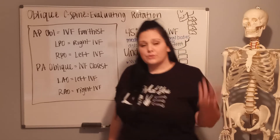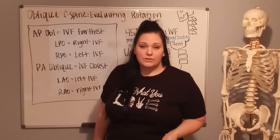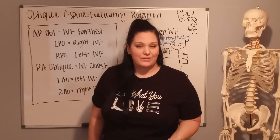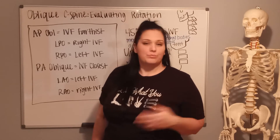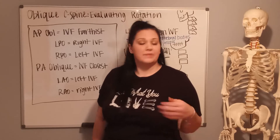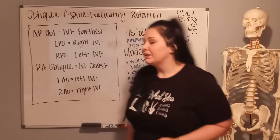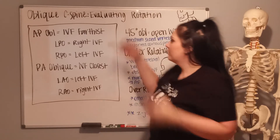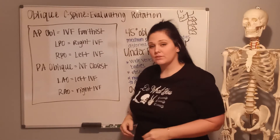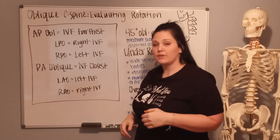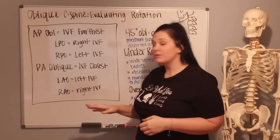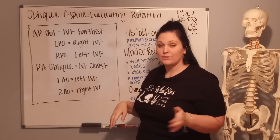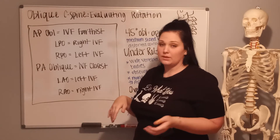With your oblique C-spine, the anatomy of interest is always going to be your intervertebral foramina, or IVF. In your AP oblique projections of the C-spine, you see the IVF farthest from the image receptor. And in your PA oblique projections, you see the IVF closest to the image receptor.